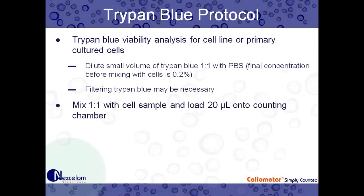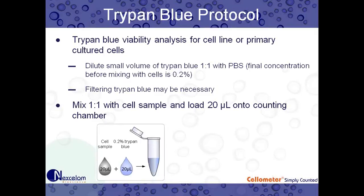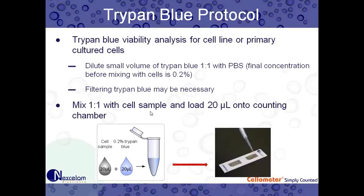Next, we mix one-to-one: take 20 microliters of our diluted Trypan Blue and mix that with 20 microliters of our cell sample. Then we load 20 microliters onto our counting chamber. So: 20 microliters cell sample, 20 microliters Trypan Blue, and we load our counting chamber to get ready to count.